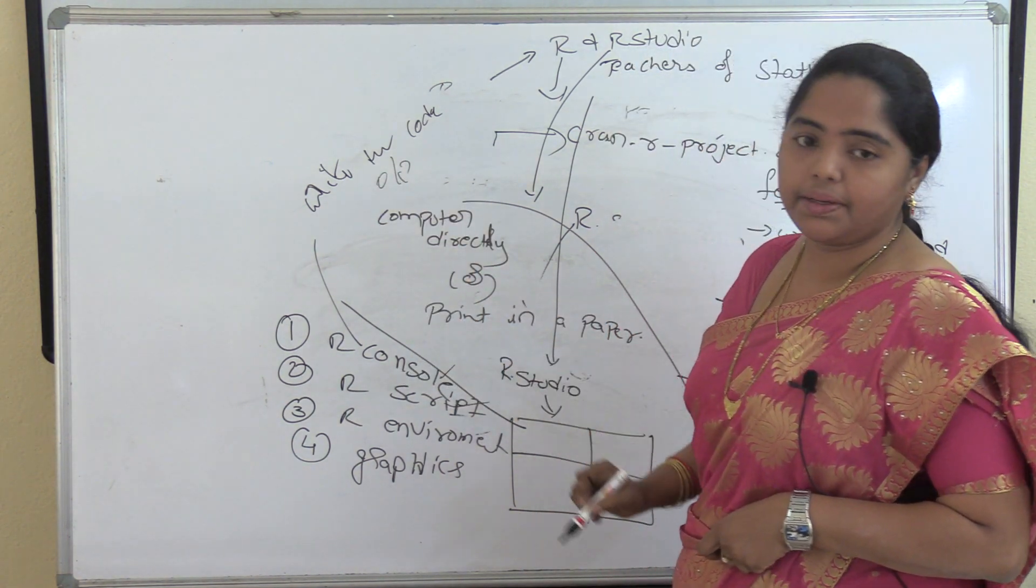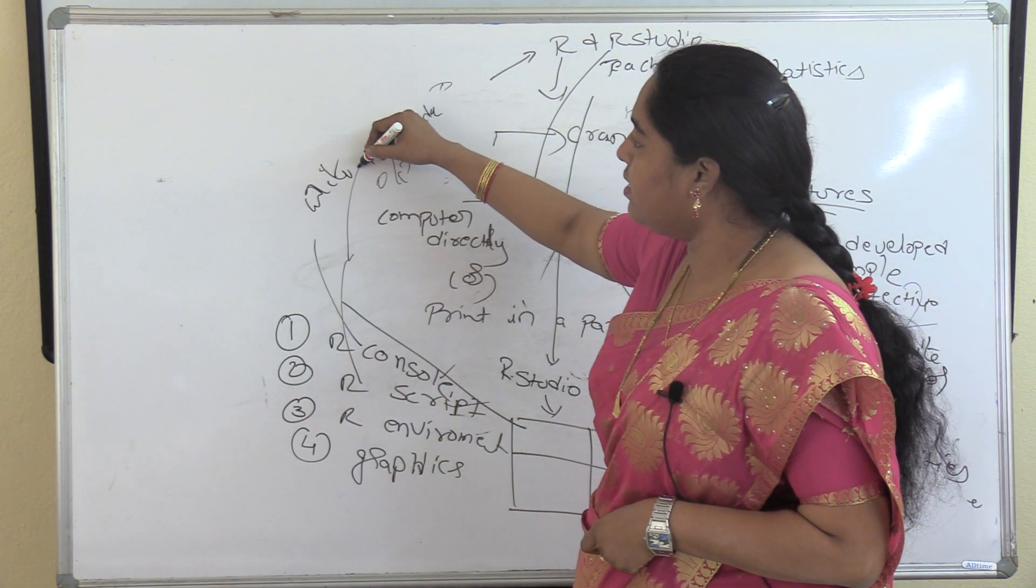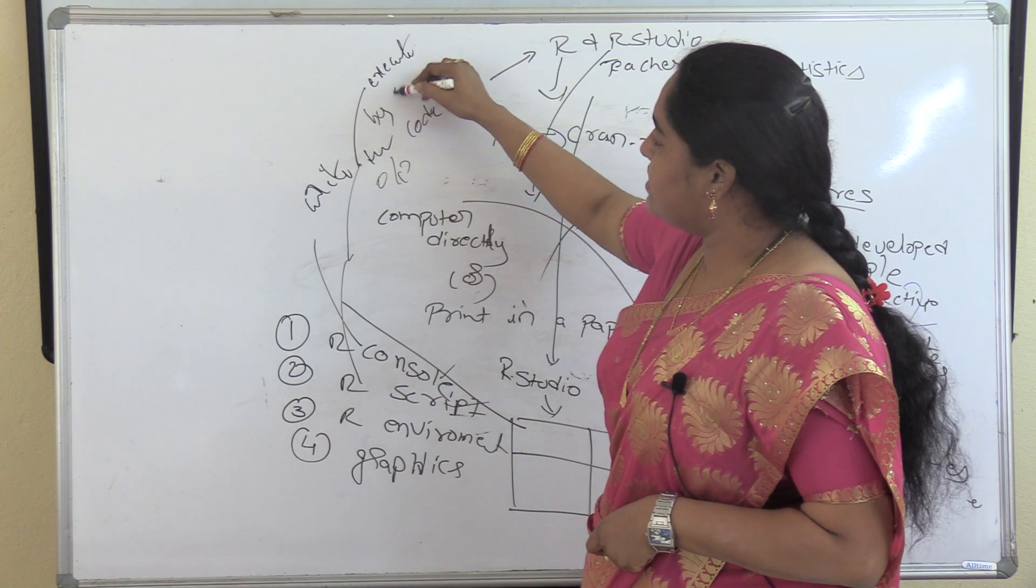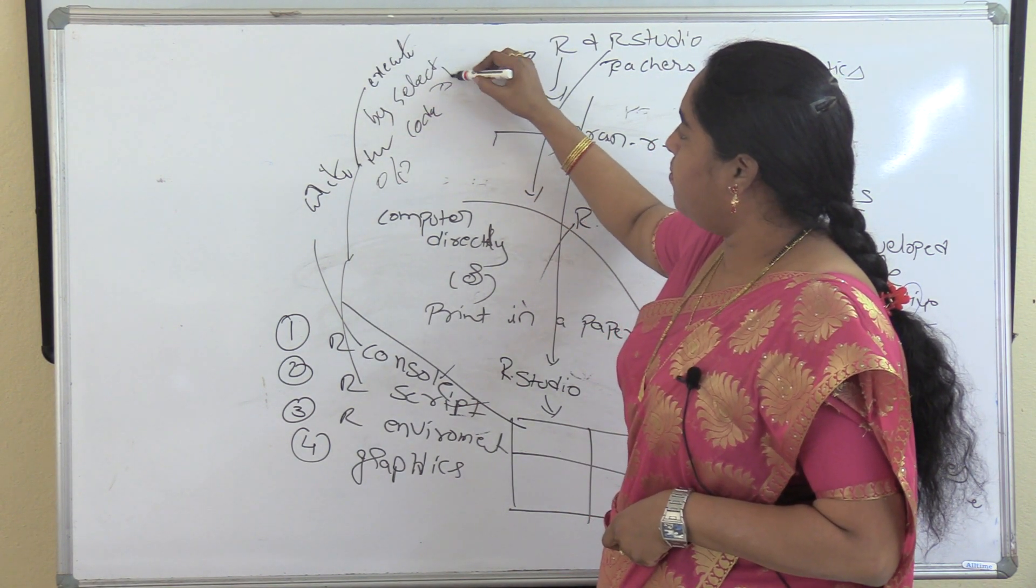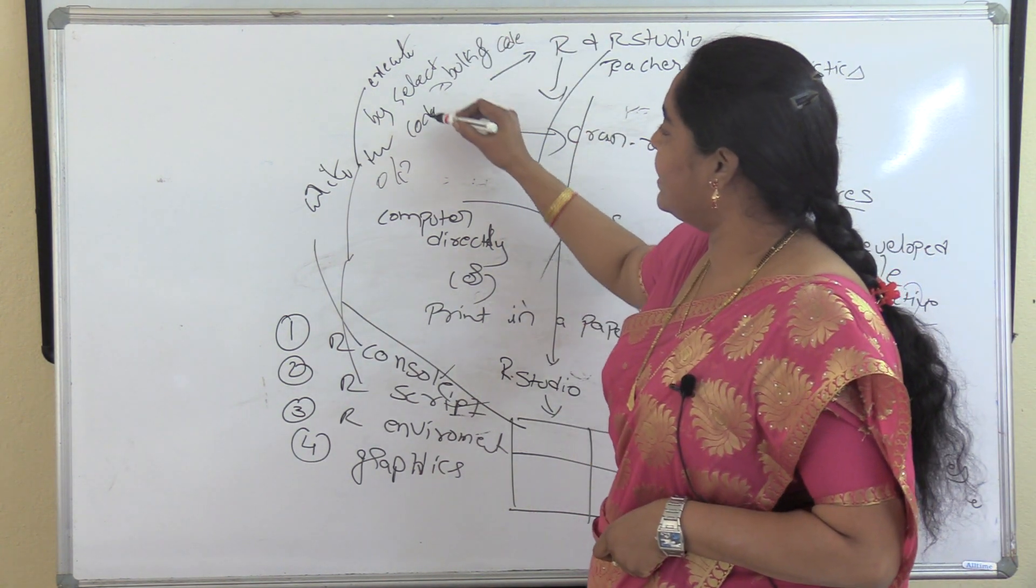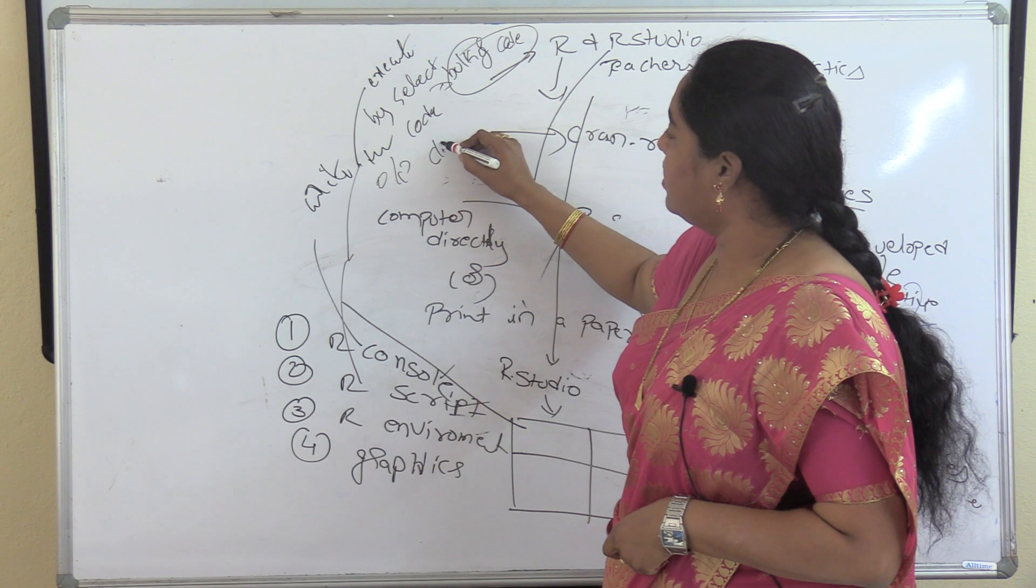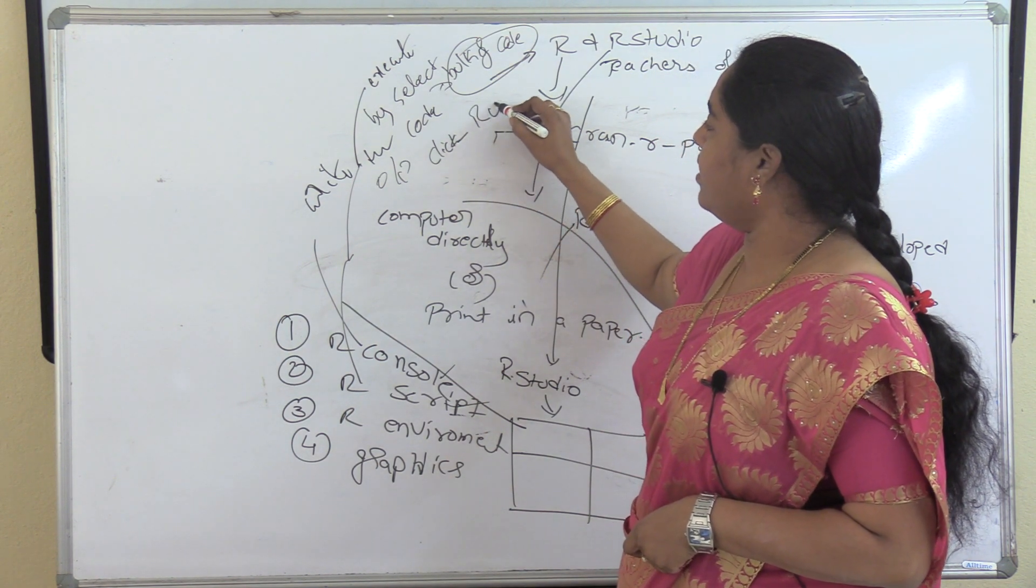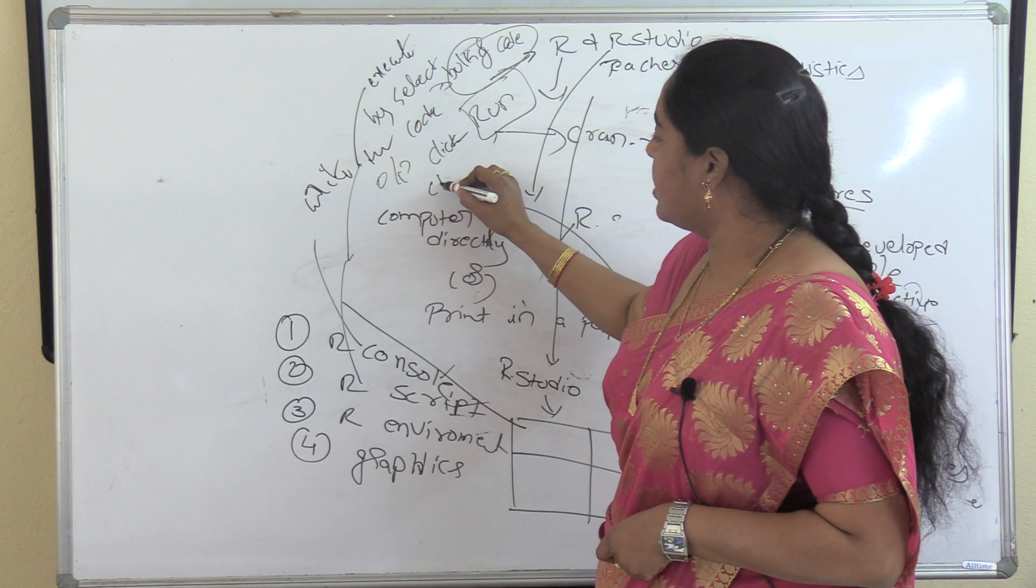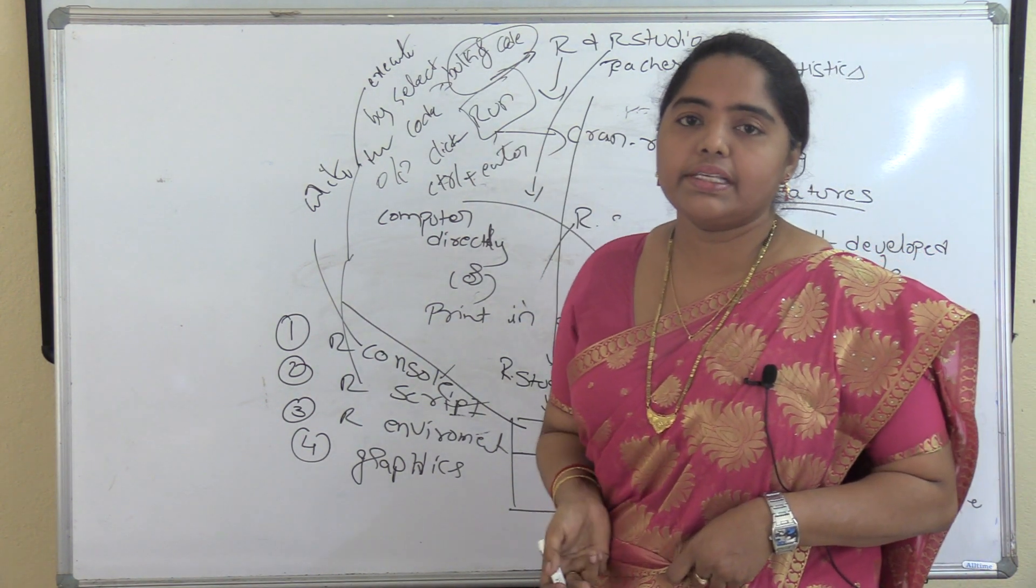Coming to R script, you are going to write the code, but bulk of code you can write here, and execute by selecting these bulk of code at a time. You can execute by clicking run tab in the window, or you can press control plus enter to execute the code.